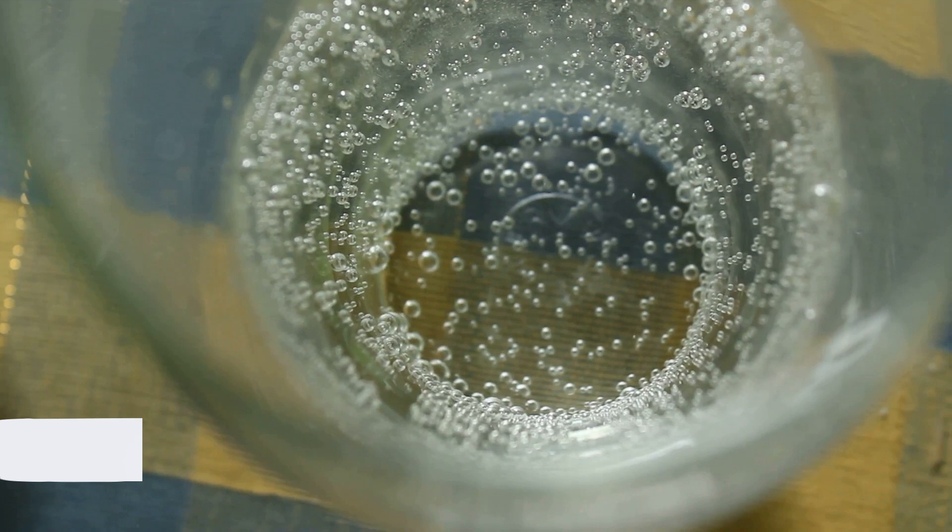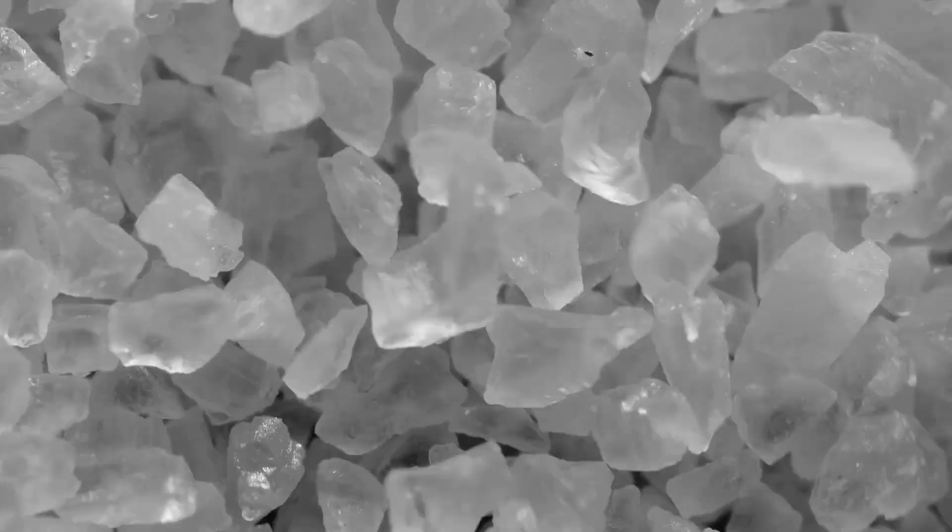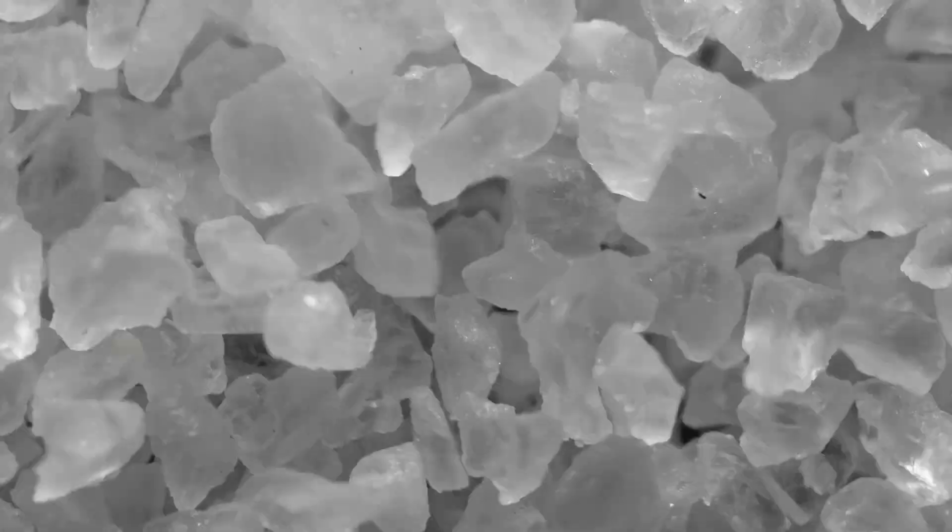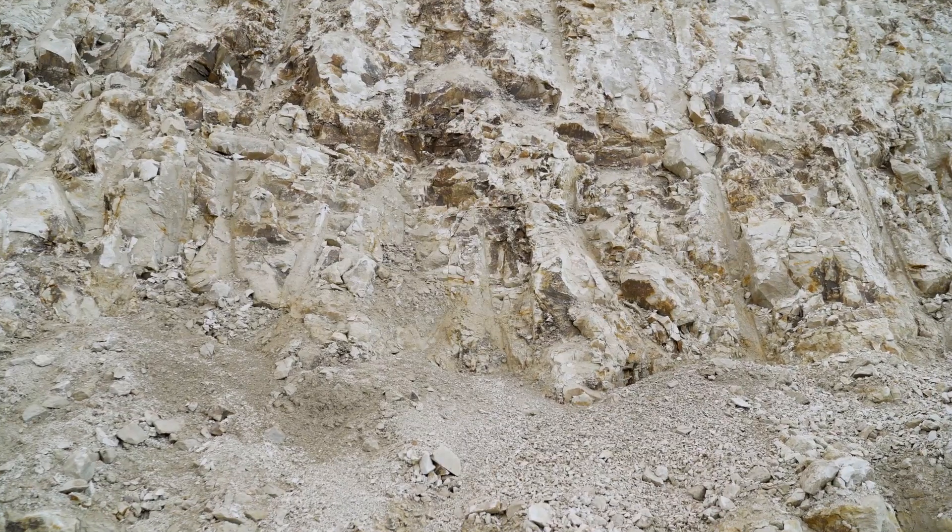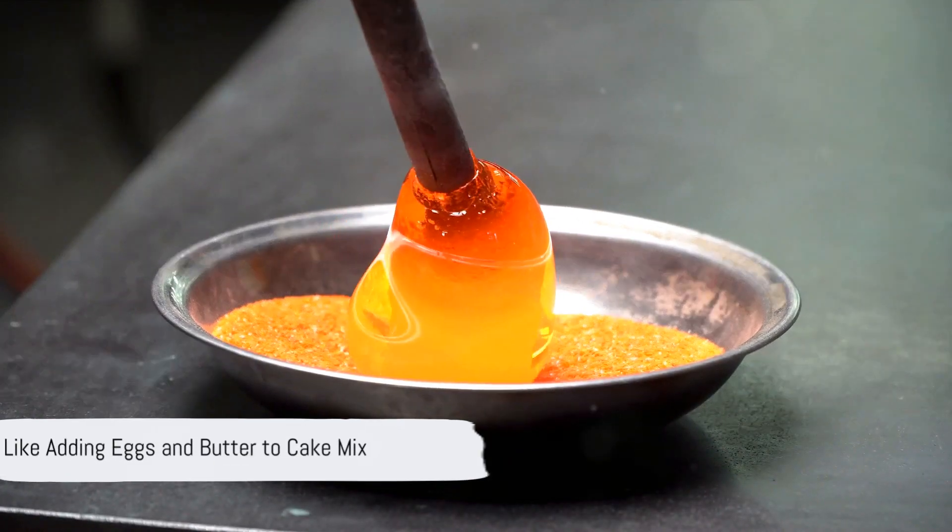Next up, the sand is combined with soda ash and limestone. It's a cocktail of sorts, but definitely not one you'd want to sip on. The soda ash lowers the sand's melting point, which saves energy, and the limestone helps the glass become more durable. It's a bit like adding eggs and butter to your cake mix.